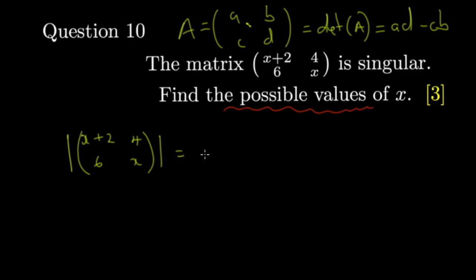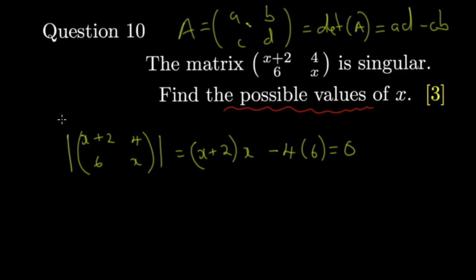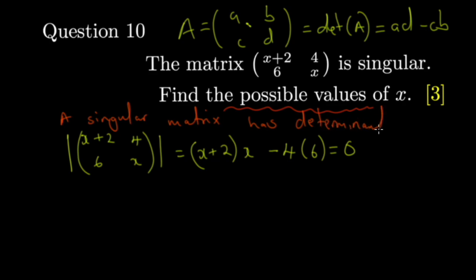The determinant equals x plus two times x, minus four times six. Since the matrix is singular, the determinant must equal zero — a singular matrix has determinant zero. So set it equal to zero. Expanding gives x squared plus 2x minus 24 equals zero.